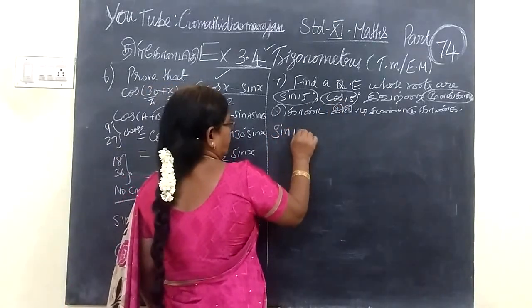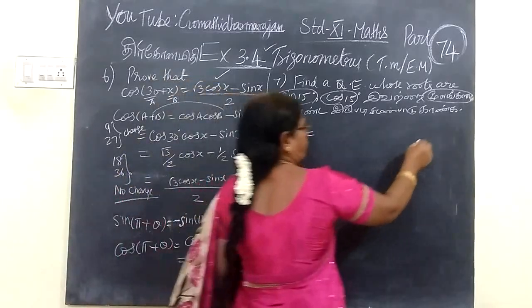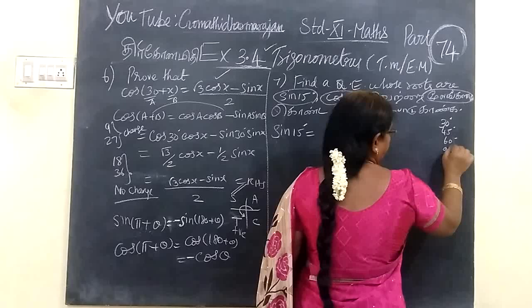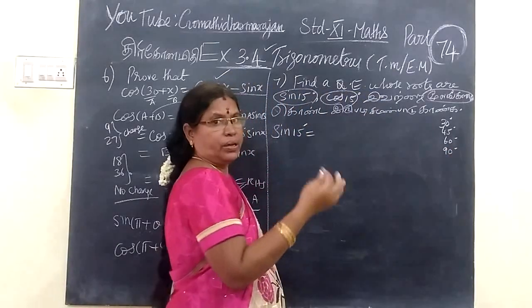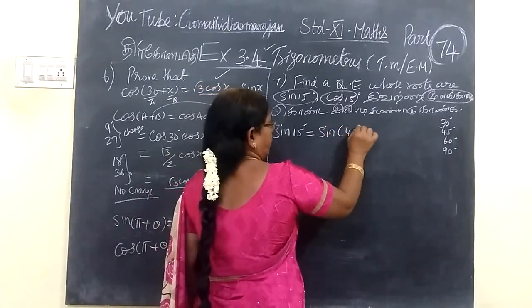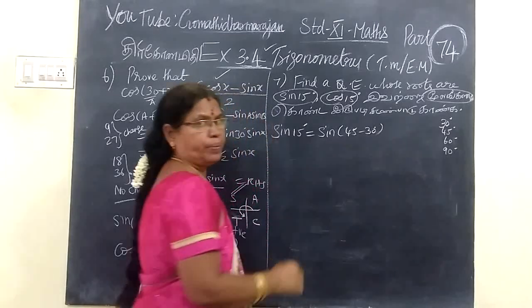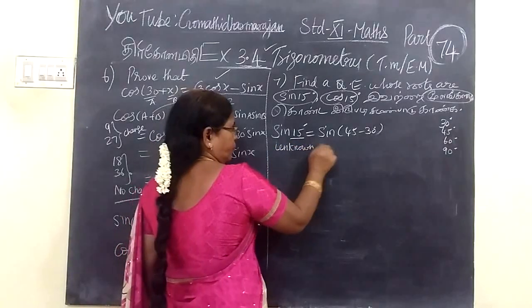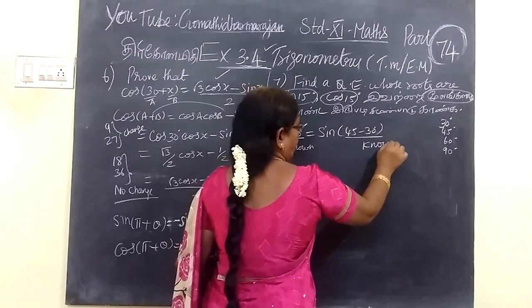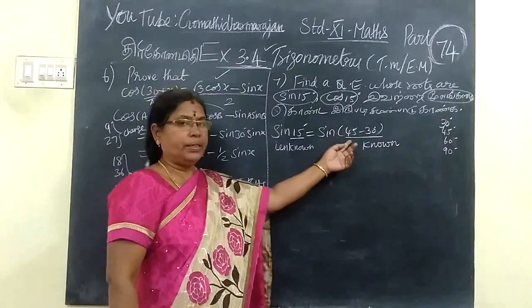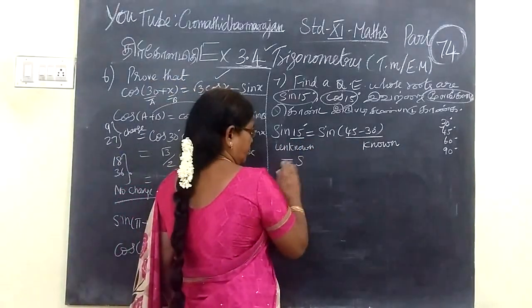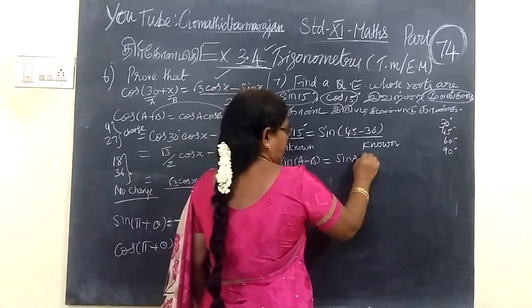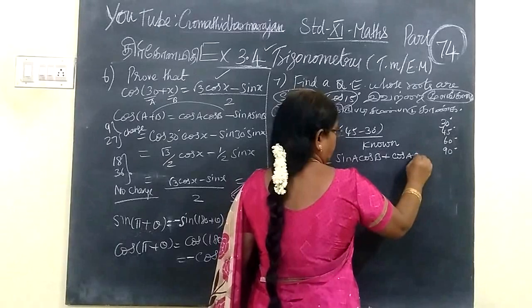So sin 15, this is sin 15 and its value we need to work out. The known values are 30, 45, 60, 90. So this time it is 45 minus 30, giving 15. This one is an unknown value, so we have to change it to known values. We write sin(A minus B) equals sin A cos B minus cos A sin B.